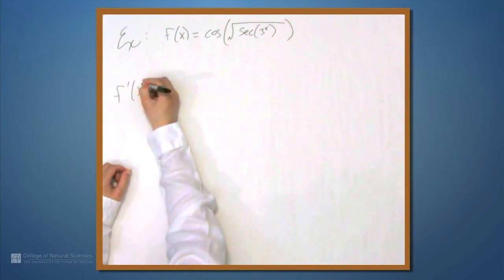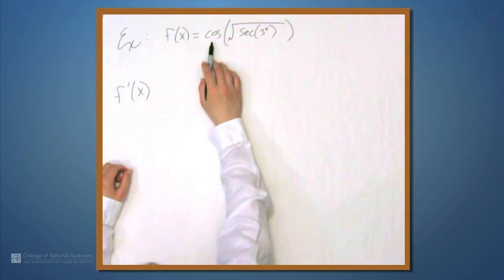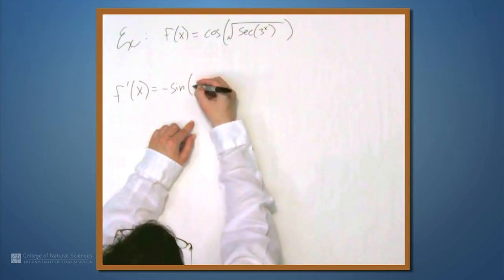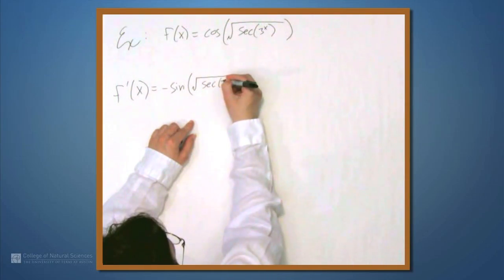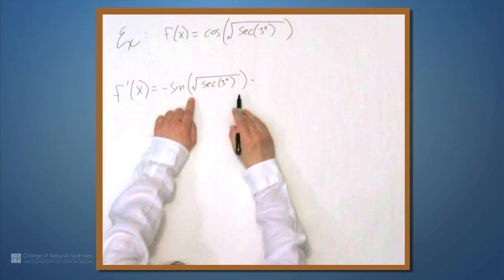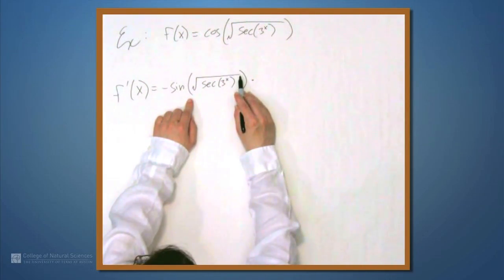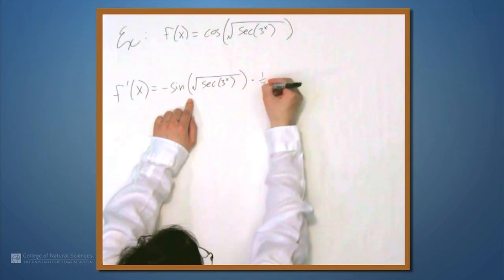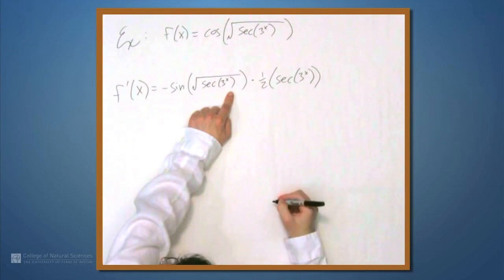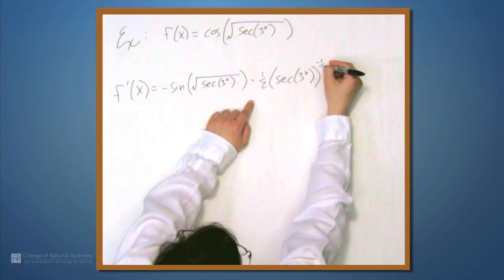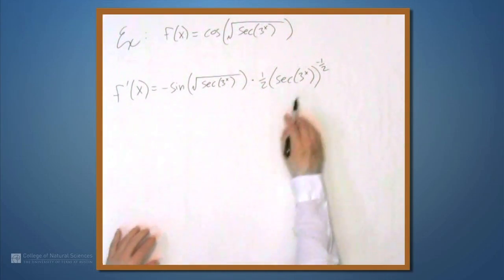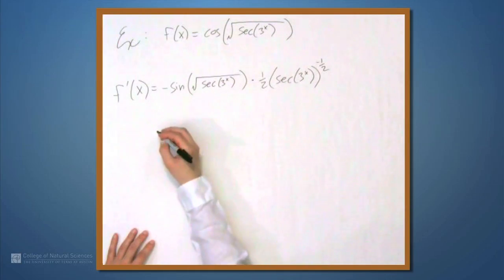So f' of x: the outermost function is cosine. The derivative of cosine is negative sine. So it's negative sine of whatever's inside — negative sine of square root of secant of 3 to the x. Now we'll multiply this by the derivative of whatever's inside. The outermost function there is the square root, so the derivative of square root gives us one half times whatever's inside the square root — which is secant of 3 to the x — to the negative one half power. Now we're going to multiply by the derivative of what's inside the square root.